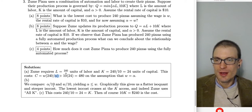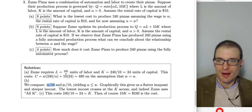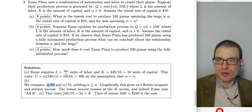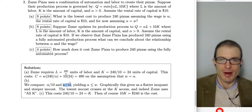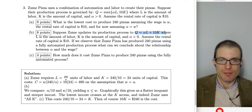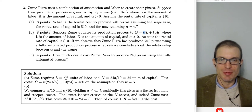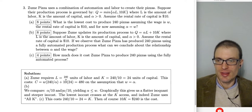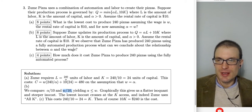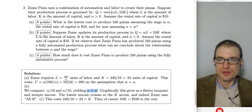For part B, Zoom updates to a perfect substitutes production process Q = αL + 10K. We compare α/10 — the ratio of marginal products, which is the slope of the isoquant — to W/10 — the slope of the isocost. The marginal product of labor is α and the marginal product of capital is 10, giving the isoquant slope of α/10 and isocost slope of W/10.